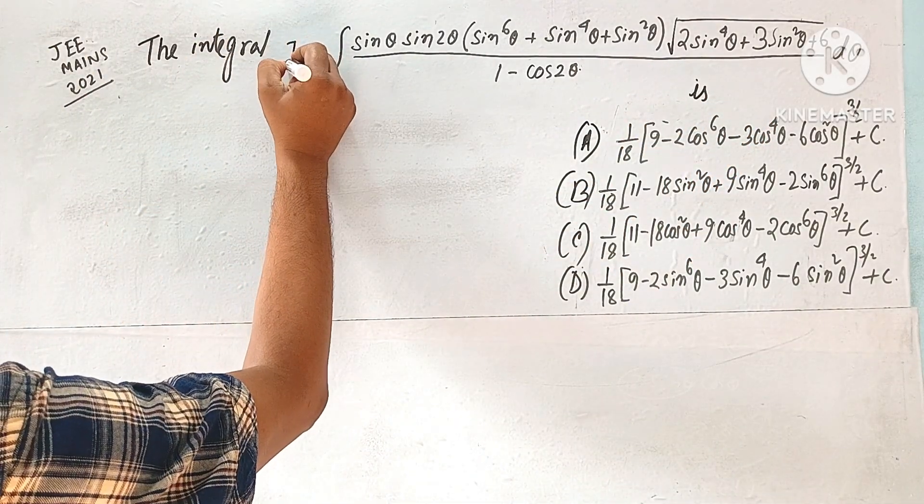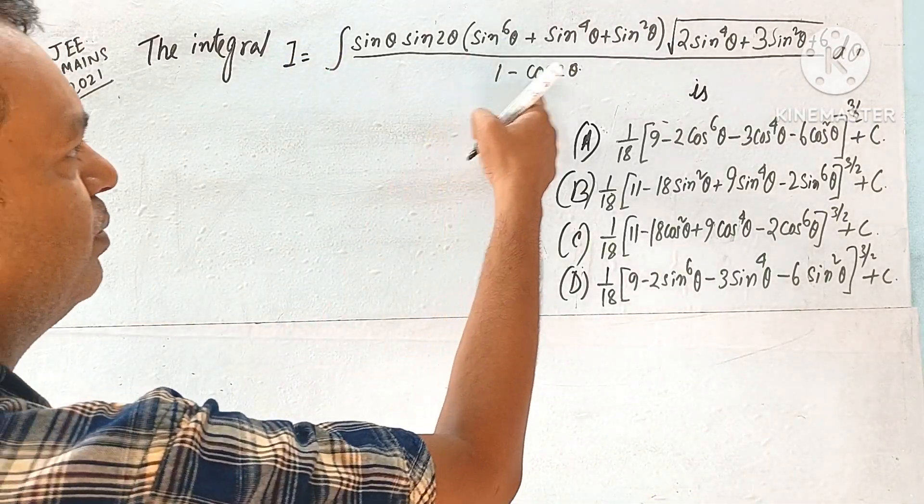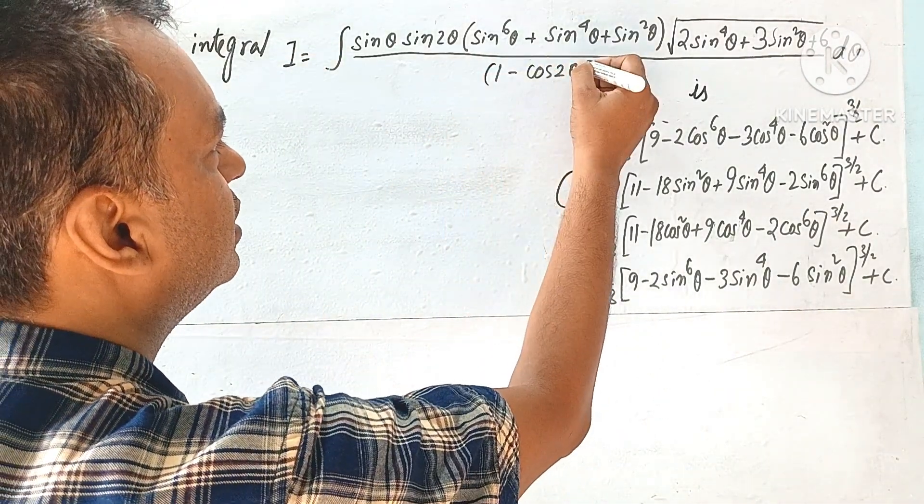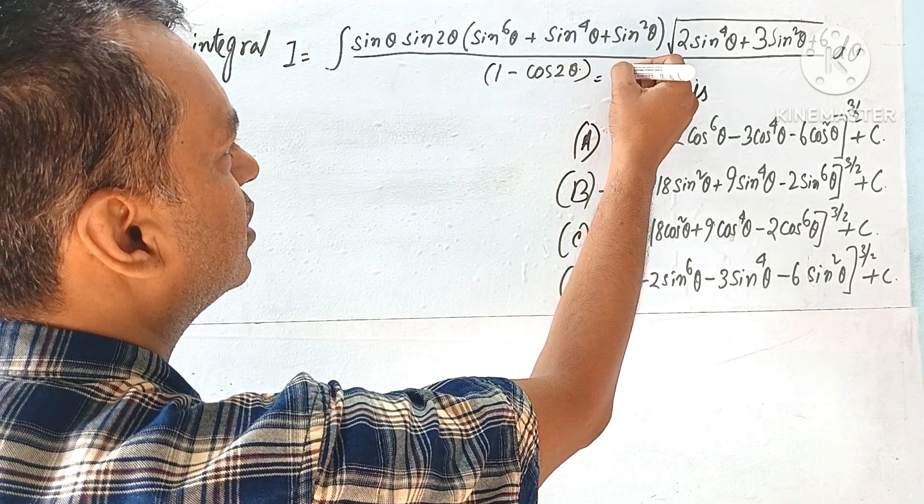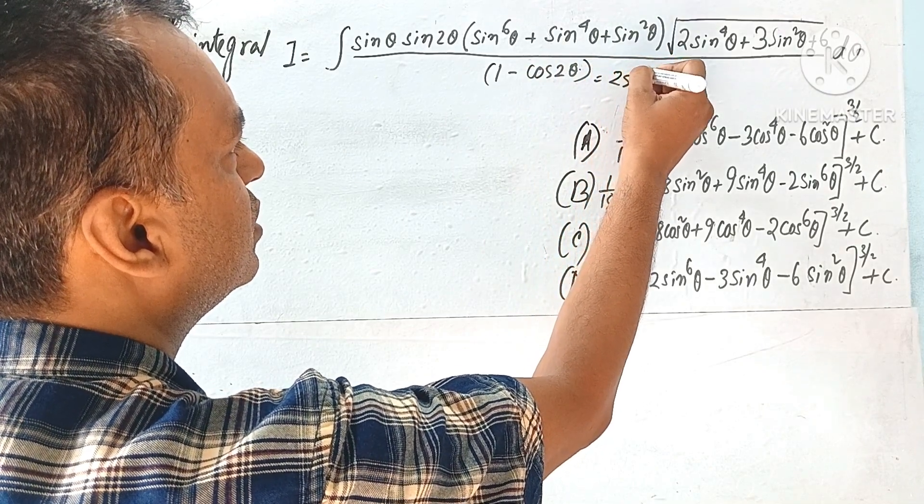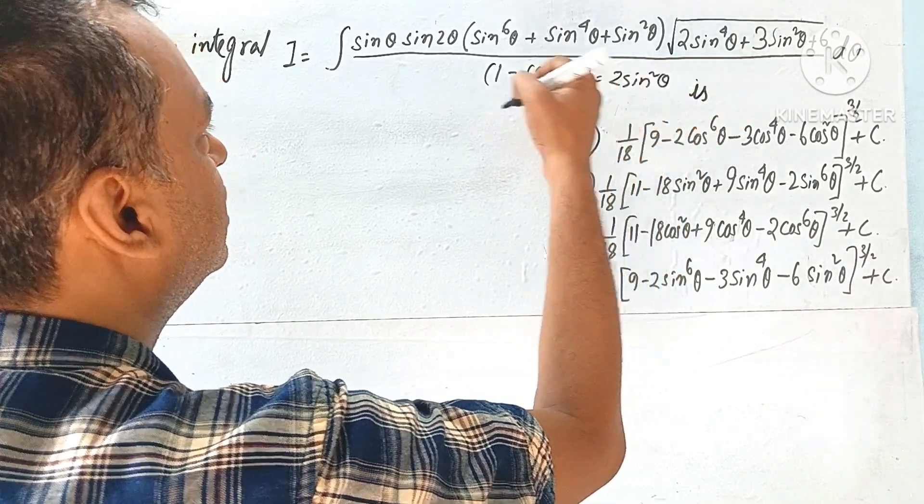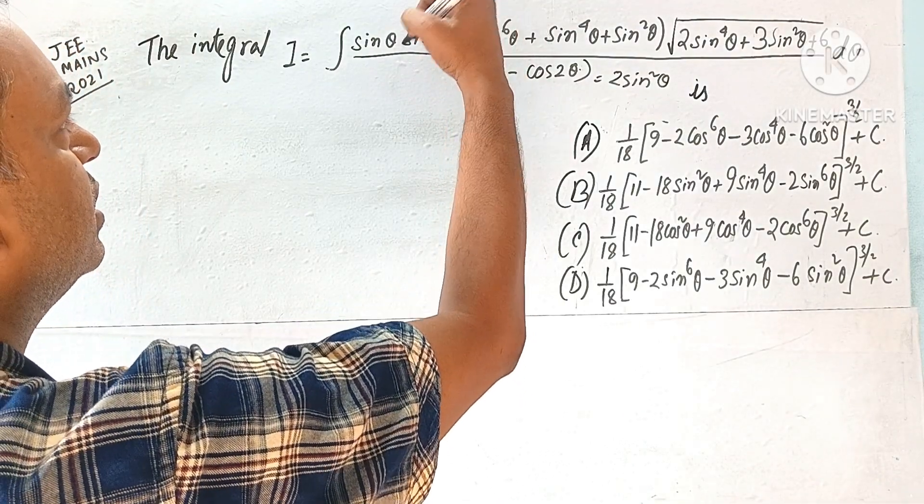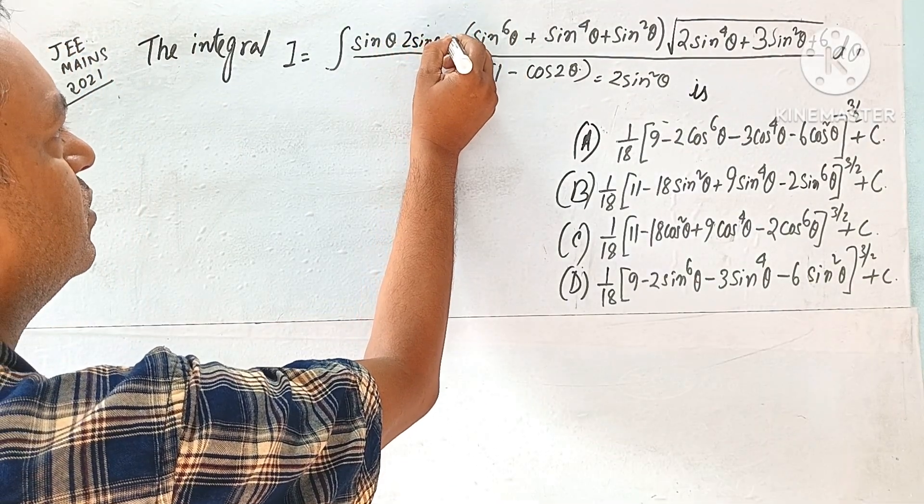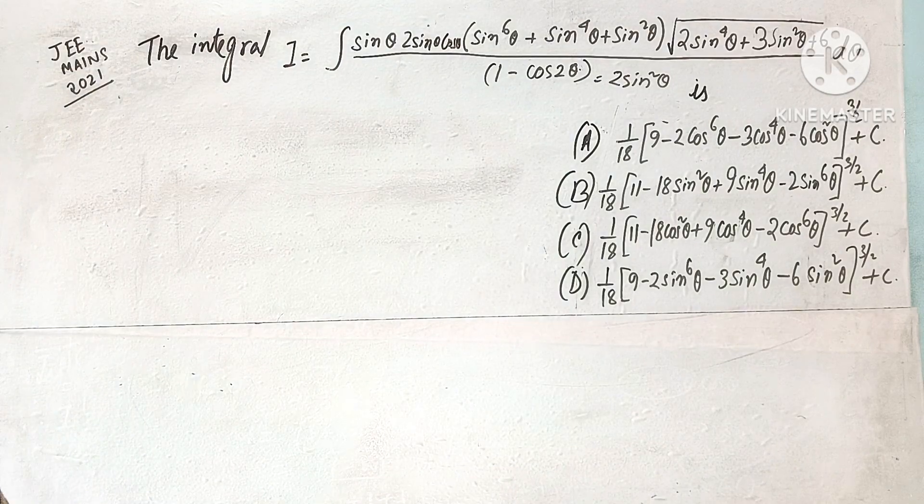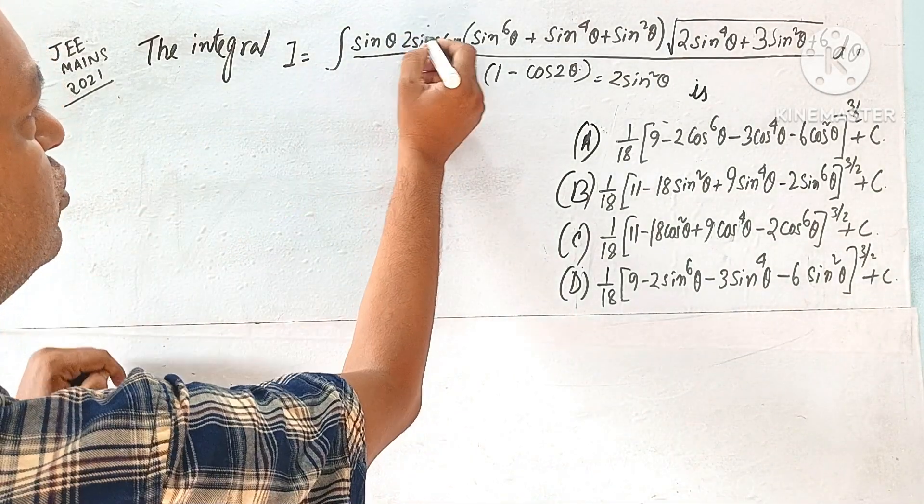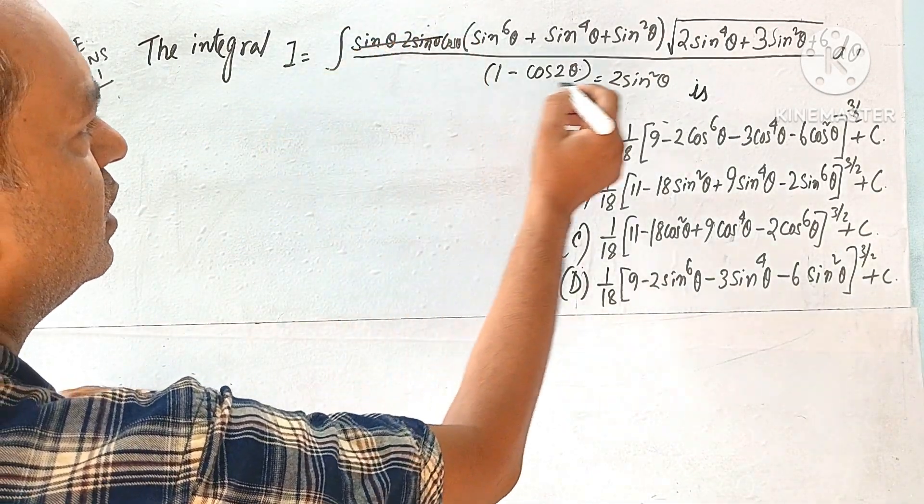So if we consider this, 1 minus cos θ, what will it be? 2 sin square θ. And what will it be? 2 sin θ cos θ. And this will be cut.